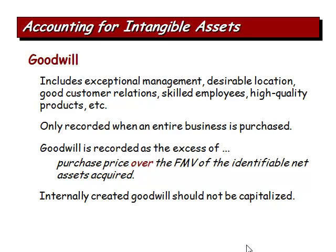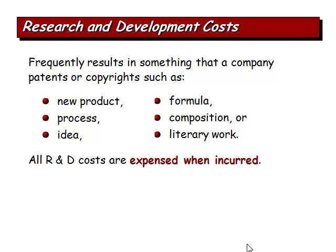Goodwill includes exceptional management skills, desirable location, good customer base, skilled employees, and high-quality products. It's only recorded when an entire business is purchased, as the excess of purchase price over the fair market value of the identifiable net assets acquired. For example, if a business is worth $1 million but individual assets only total $800,000, we'd be paying an extra $200,000 for goodwill. R&D costs frequently result in patents or copyrights, but all R&D costs are expensed when incurred.